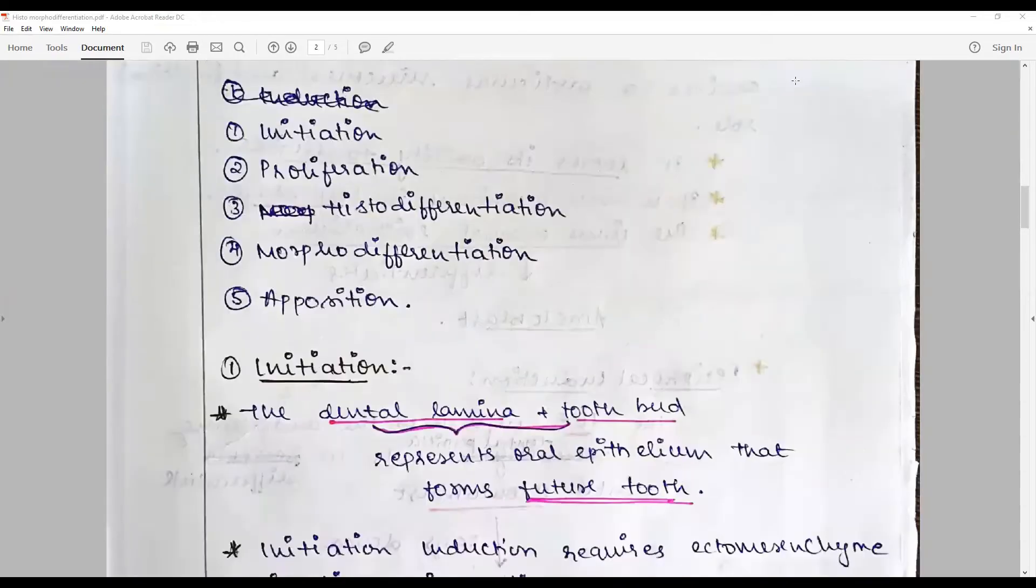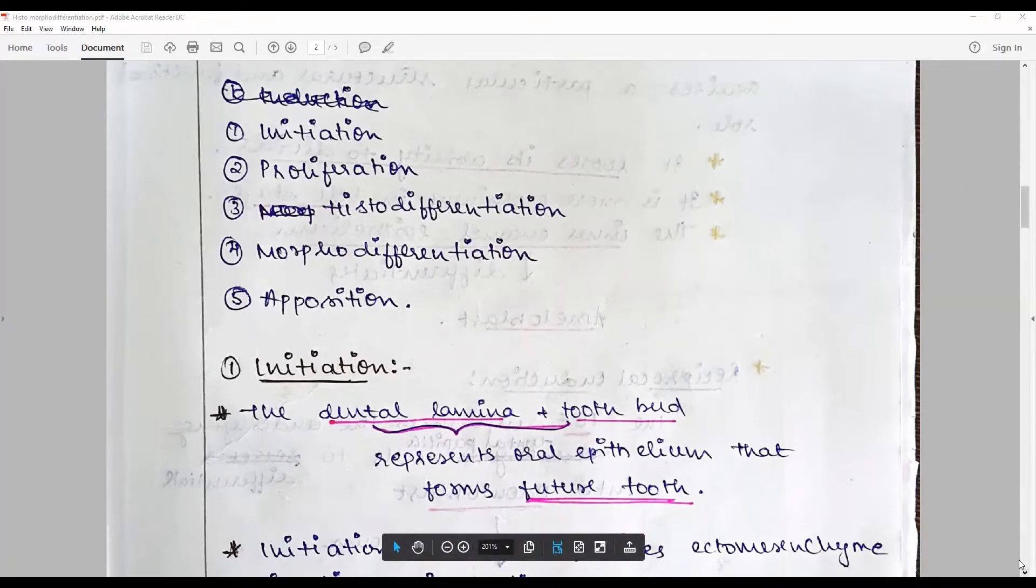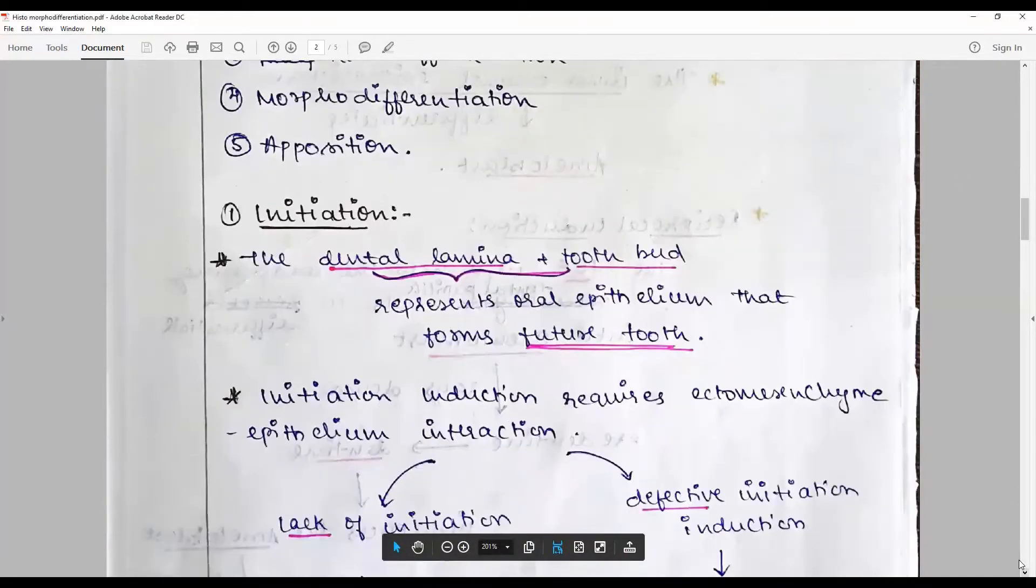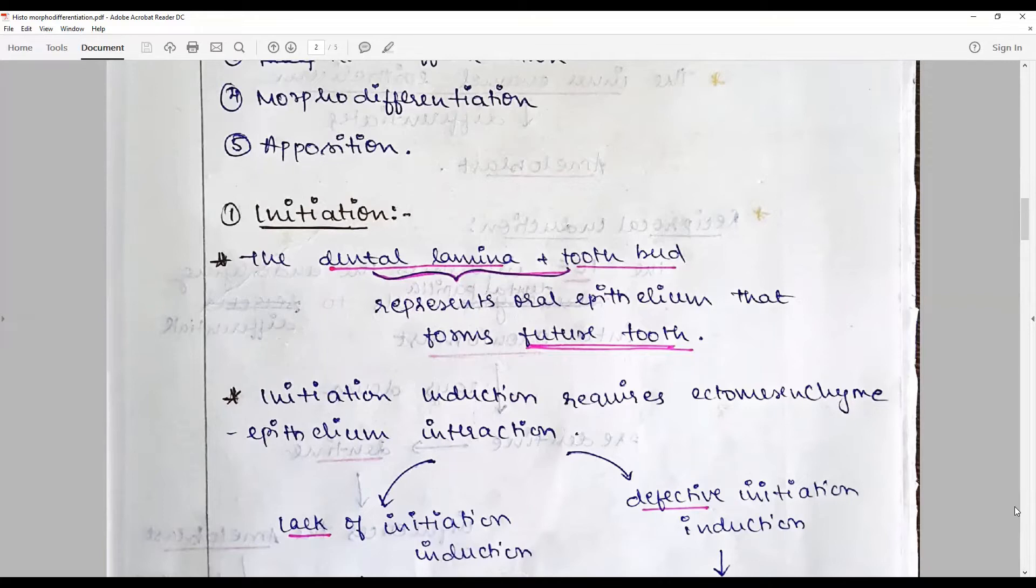In the initiation, the dental lamina and tooth bud formation happens. The initiation is inducted, requiring reciprocal interaction of ectomesenchyme with the odontogenic epithelium. The inner enamel epithelium turns into ameloblast in this process, while the superficial layer of dental papilla turns into odontoblast.